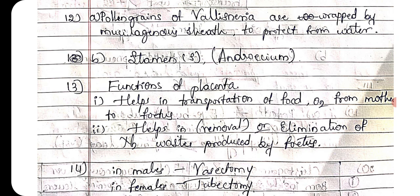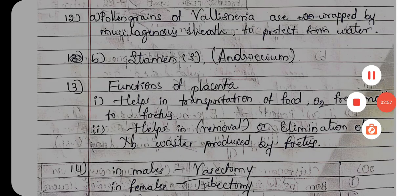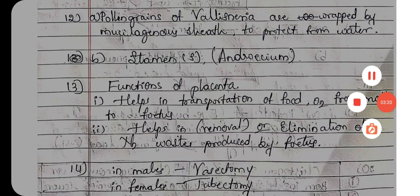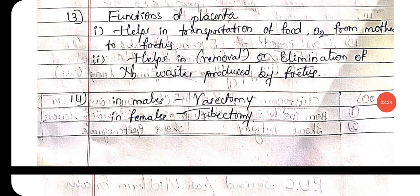The pollen grains of Vallisneria protect themselves by the formation of a mucilaginous sheath around the pollen grain. Another question: name the reproductive structure of the flower. The main reproductive structure of the flower is the stamen, collectively called the androecium.